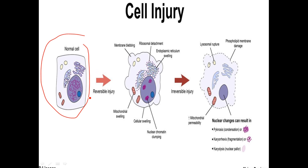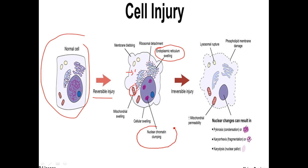If a cell undergoes hypoxic conditions, the first initial state is reversible injury. Water and ions enter the cell causing swelling, membrane blebbing, and cytoskeletal deformation. The ribosome detaches from the rough endoplasmic reticulum due to endoplasmic reticulum swelling. Organelle swelling and nuclear chromatin clumping can also happen.